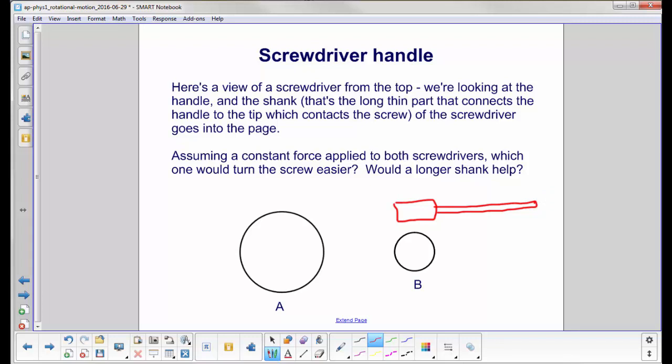So, assume that you apply a constant force to each screwdriver. Which one would turn the screw easier? Would a longer shank, and this here is the shank, would that help?